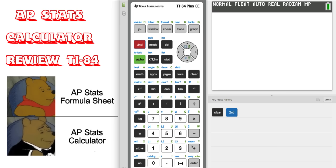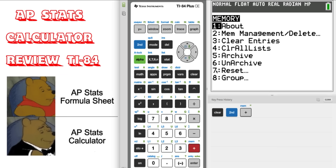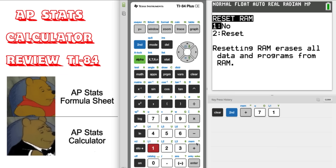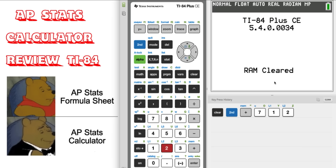First we're going to go into the memory which is above the plus sign here. We're going to hit seven. We're going to reset all the RAM. Hit one and then two. And now we have a brand new calculator. It's been reset so we don't have any polar graphs or anything like that.